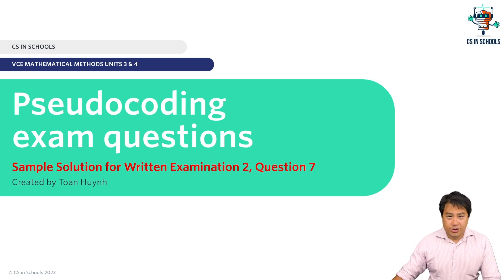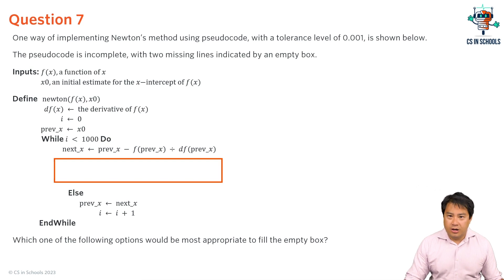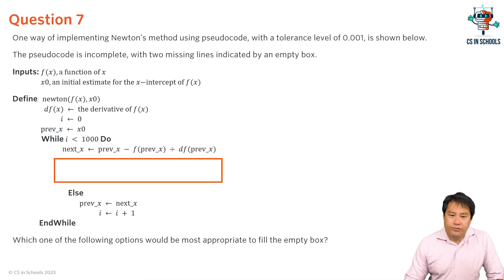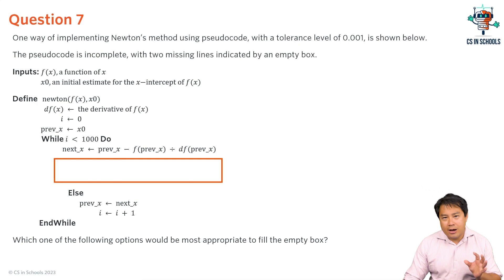This one is also focused on pseudocode. Question seven states that one way of implementing Newton's method using pseudocode with a tolerance level of 0.001 is shown below. The pseudocode is incomplete with two missing lines indicated by an empty box, and we need to determine which option would be most appropriate to fill the empty box. This question is a little different from other pseudocode questions we've gone through, in that this one requires us to understand how Newton's method works and how to represent that in pseudocode.